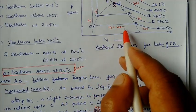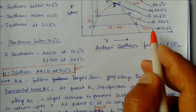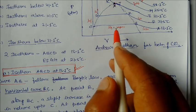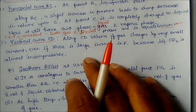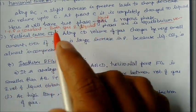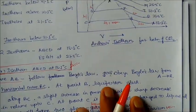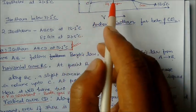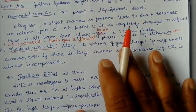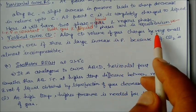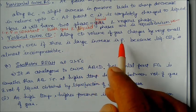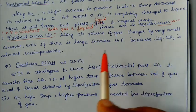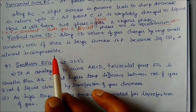After point C, the vertical curve CD shows that when pressure is increased, the volume does not change significantly — it remains a nearly straight vertical line. This is because liquid carbon dioxide is almost incompressible. So along CD, even a large increase in pressure produces very little change in volume.